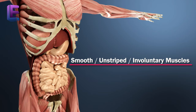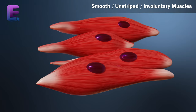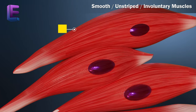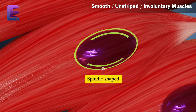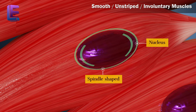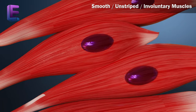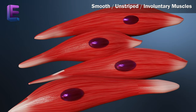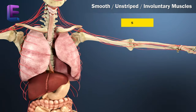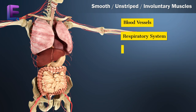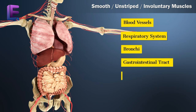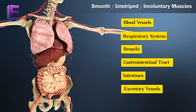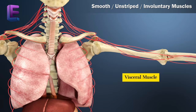Smooth or unstriped or involuntary muscles are arranged in layers or as tiles. Smooth muscle fibers are uninucleate spindle-shaped cells. The thin and thick filaments of smooth muscles are not well organized and oriented. Such types of muscles are found in blood vessels, respiratory system, bronchi, gastrointestinal tract, intestines, excretory vessels, genitals, and other internal viscera. Therefore, they are called the visceral muscles.